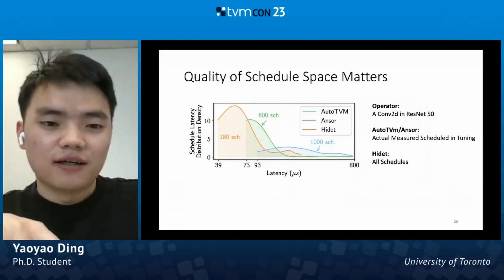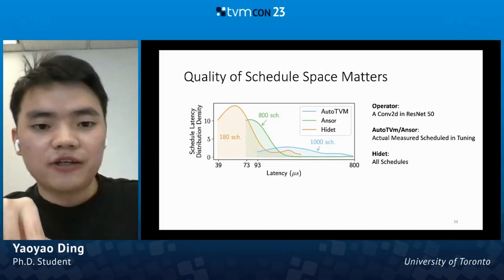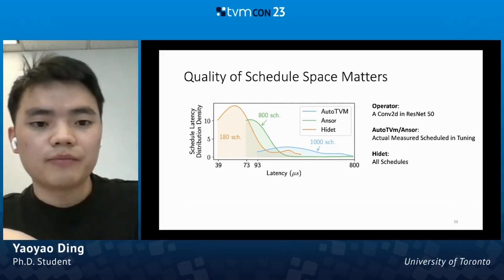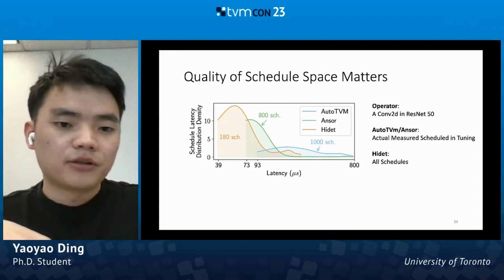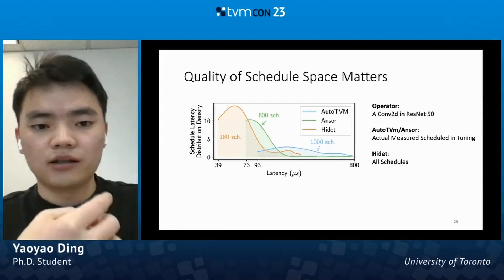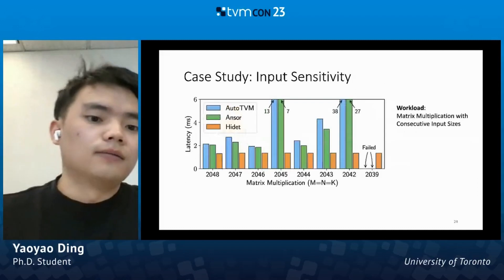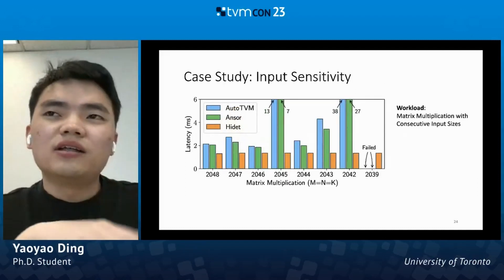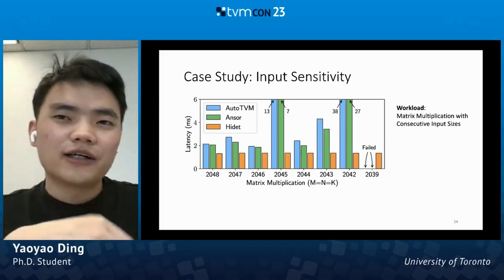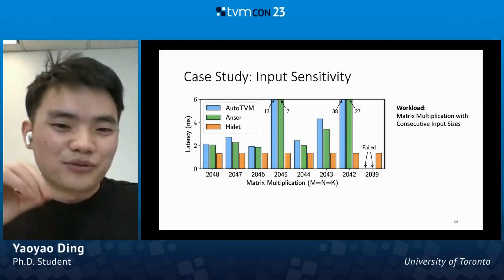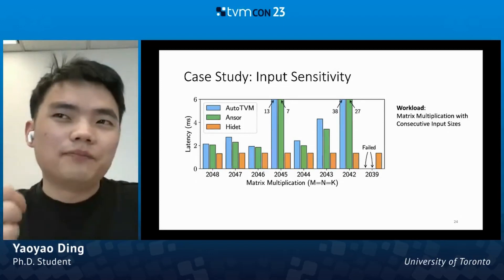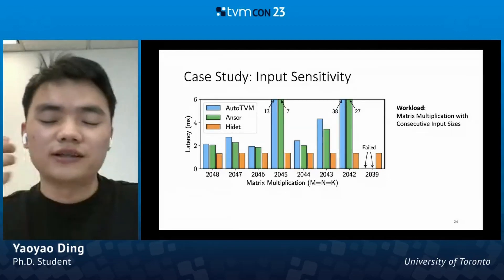We also compare the quality of schedule space in AutoTVM, Ansor, and HiDet, using an operator in ResNet-50 as an example. We use actual measured schedules during tuning from AutoTVM and Ansor to represent the schedule space. We find that because HiDet incorporates more optimizations, even though our schedule space is much smaller, its quality is better than the schedule space adopted by AutoTVM and Ansor. We also found that TVM will only split a loop with its factors, which makes the kernel very sensitive to input size — if the input size is a prime number, it even fails to generate the kernel. Because we have better support for partial tiles, HiDet is not very sensitive to input size.